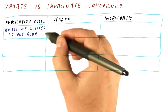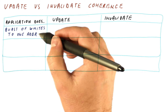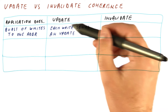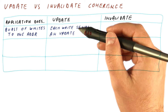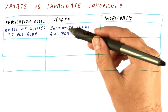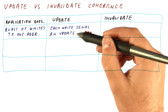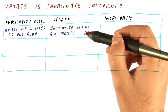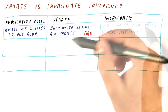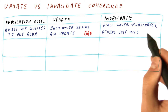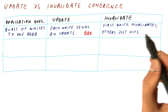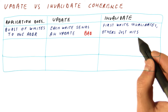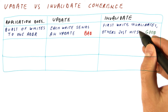If the application has a burst of writes to one address, and if that address is shared, then each write will send an update in an update protocol. This is bad because each update results in competing for the bus, creating bus contention, consuming energy, and making writes slower. In an invalidate protocol, only the first write will send out an invalidation, and the remaining writes are just cache hits that don't result in any bus traffic. That is good.